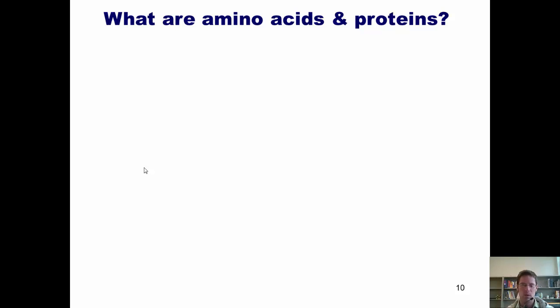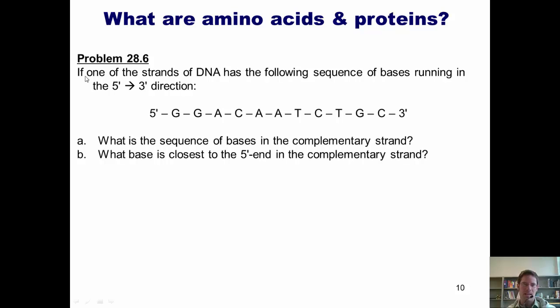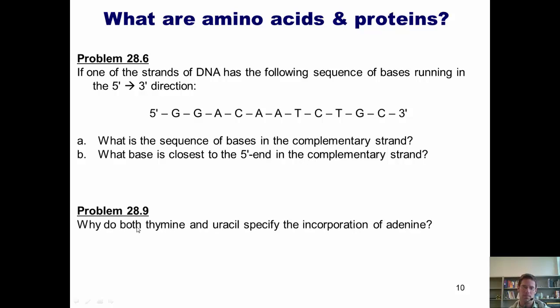So, let's see if we can hit some example questions. Here's the first one. If one of the strands of DNA has the following sequence of bases running in the five prime, three prime direction, can you tell me what is the sequence of bases in the complementary strand of DNA? I also want you to tell me what base is closest to the five prime end in the complementary strand. Here's a second question. Why do both thymine and uracil specify the incorporation of adenine? Now, I hate to spoil things for you guys, but I'm actually not going to answer these questions here in this video presentation. For that, you'll have to show up to class.